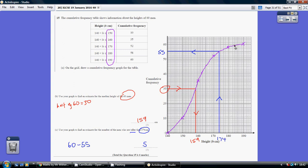So that's our graph, falling over S. Now, for part B, use your graph to find an estimate for the median height of the 60 men.